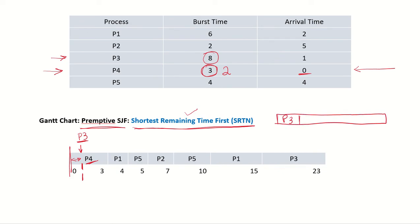So P4 will continue running and P3 will be put in the ready queue with a burst time of 8. At time unit 2, process P1 arrives with a burst time of 6. The remaining time of P4 is now 1, since it has run for one more time unit. Comparing 1 with 6, P4 again has the shortest remaining time, so P4 continues to run and P1 is put in the queue with a burst time of 6.